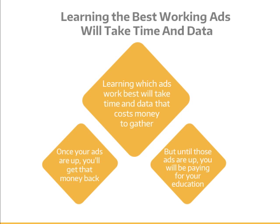Learning which ads work best for which markets and for which offers will take time and data. And that data and that education will cost money to gather. Once your ads are up and running at their best, you'll get that money back — you'll be able to set a budget of, say, $100 a day and sell that traffic on from your website for $200 a day, giving you a $100 profit from that channel with no more effort. The goal of your CPC and CPM optimization will be to create a long-term, hands-free revenue stream. But until those ads are up and running at their best, you will be paying for your education.